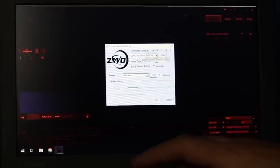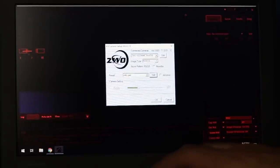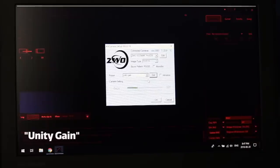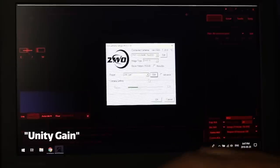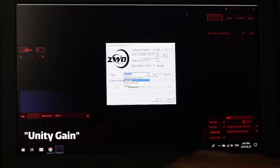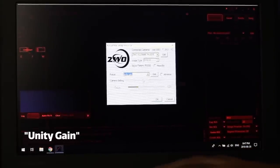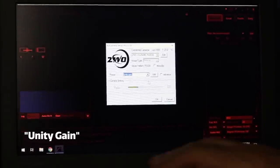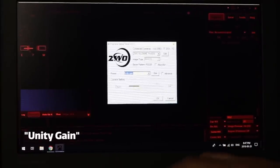And then in the properties, this is where you'll set your gain and your gain control. So unity gain is the preferred setting that I like to use with this camera. So if you have it too, I would start with unity gain first. Don't mess around with the custom gain controls just yet. Try unity gain.